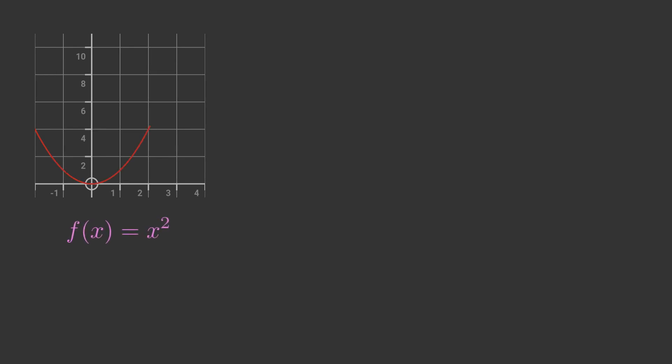This graph shows the function f equals x squared. If we wish to find f for any particular value of x, we can simply find the value of x squared. For example, f is equal to 2 squared, which of course is 4. We can illustrate this on the graph: we draw a vertical line from the x axis where x equals 2, and that line crosses the function curve where y equals 4.